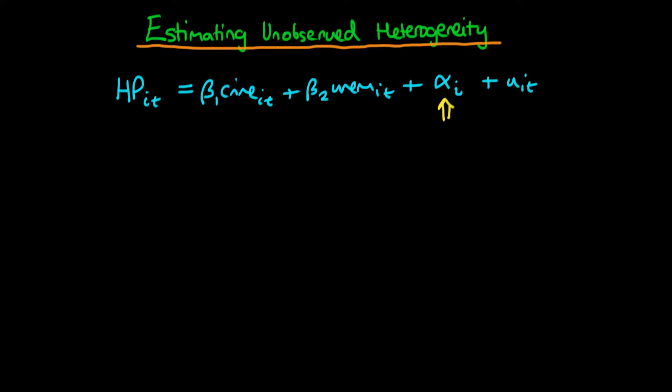So one of the ways we could go about estimating this alpha i is to just use least squares dummy variables, which is just including a dummy variable for each of the different cities. So here our estimated equation will be house price in city i at time t equals beta 1 times the crime rate in city i at time t plus beta 2 times the unemployment rate in city i at time t. And then we're going to include explicitly dummy variables for n-1 of the cities. We only need to do it for n-1 of the cities because if we were to include it for n cities we would have issues of perfect collinearity.